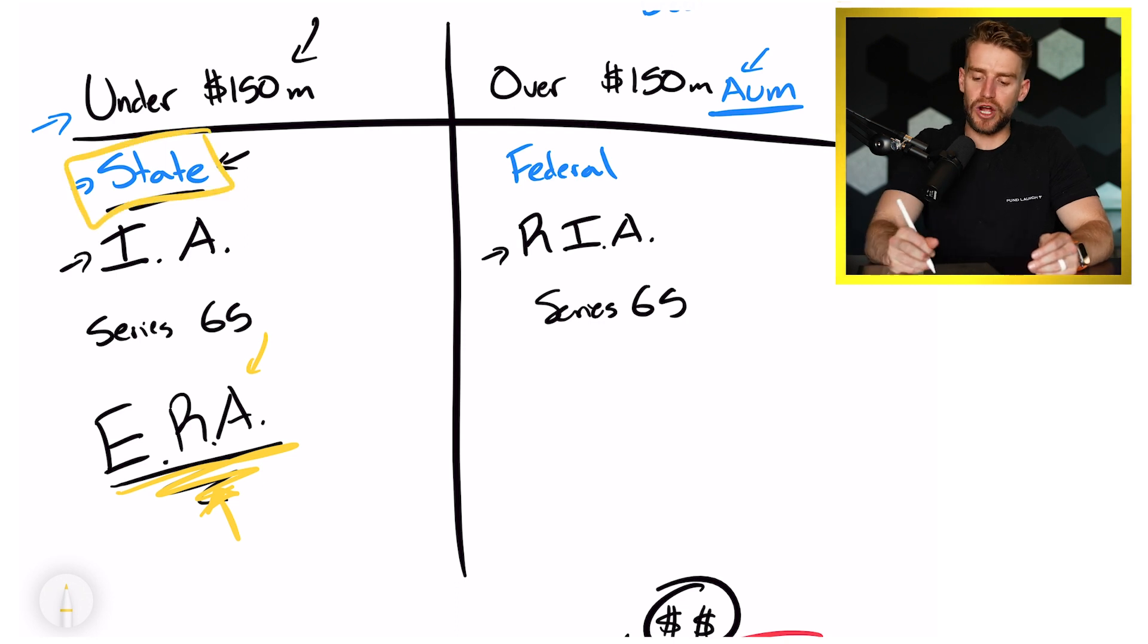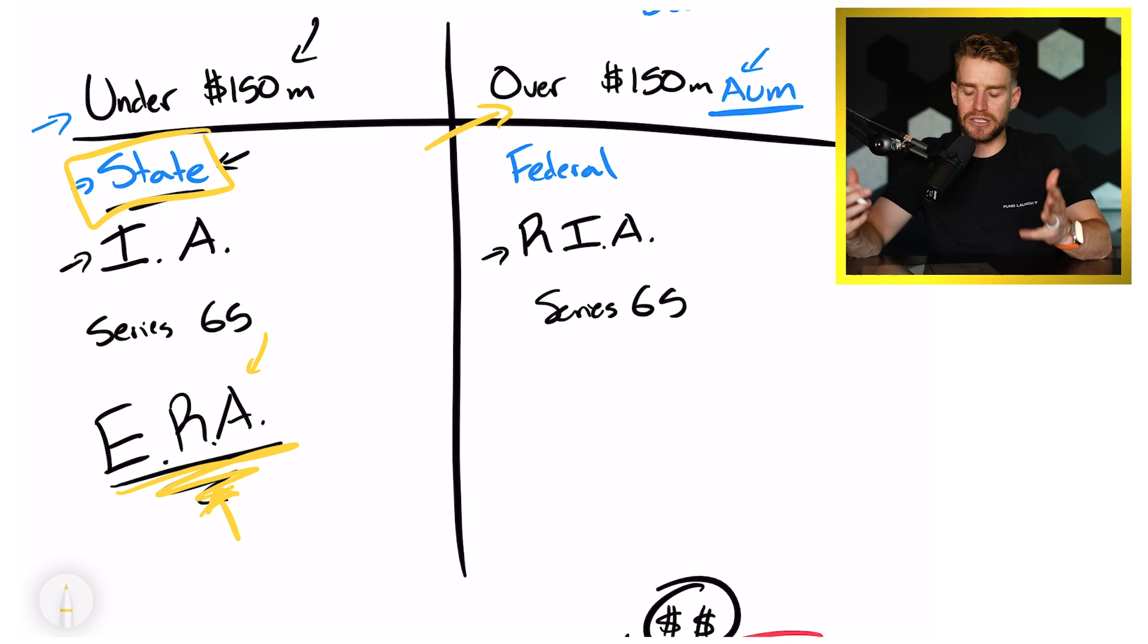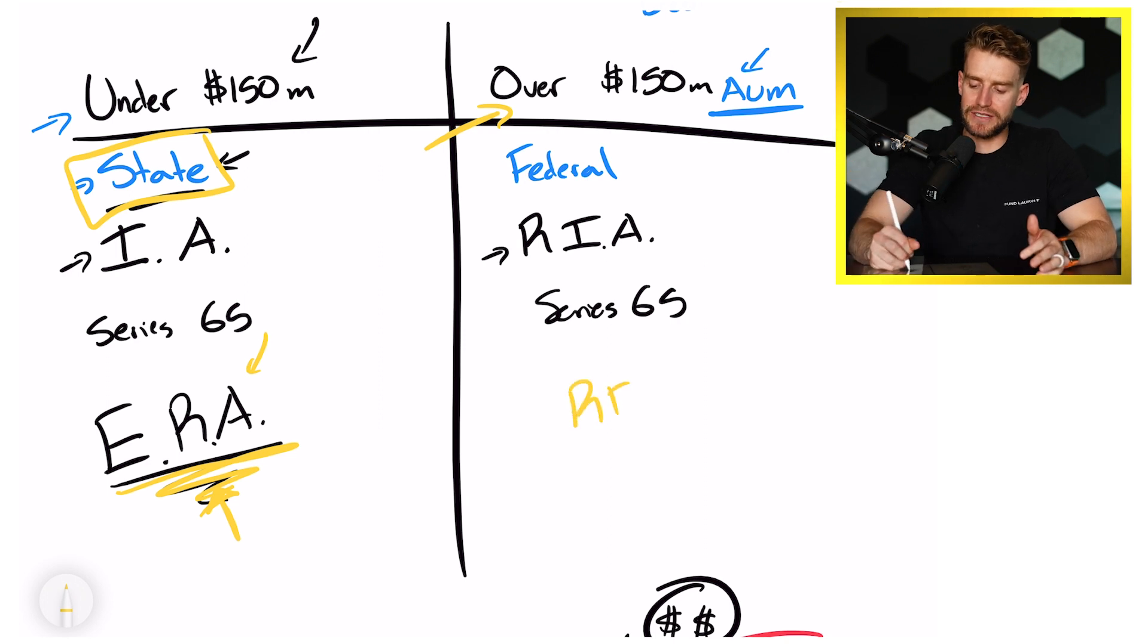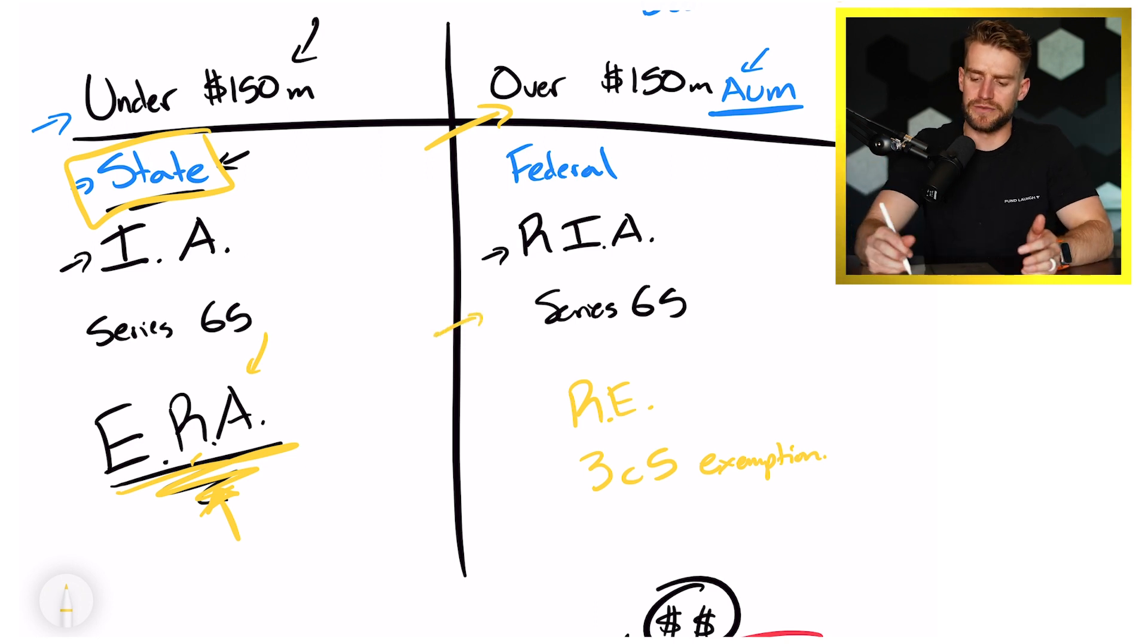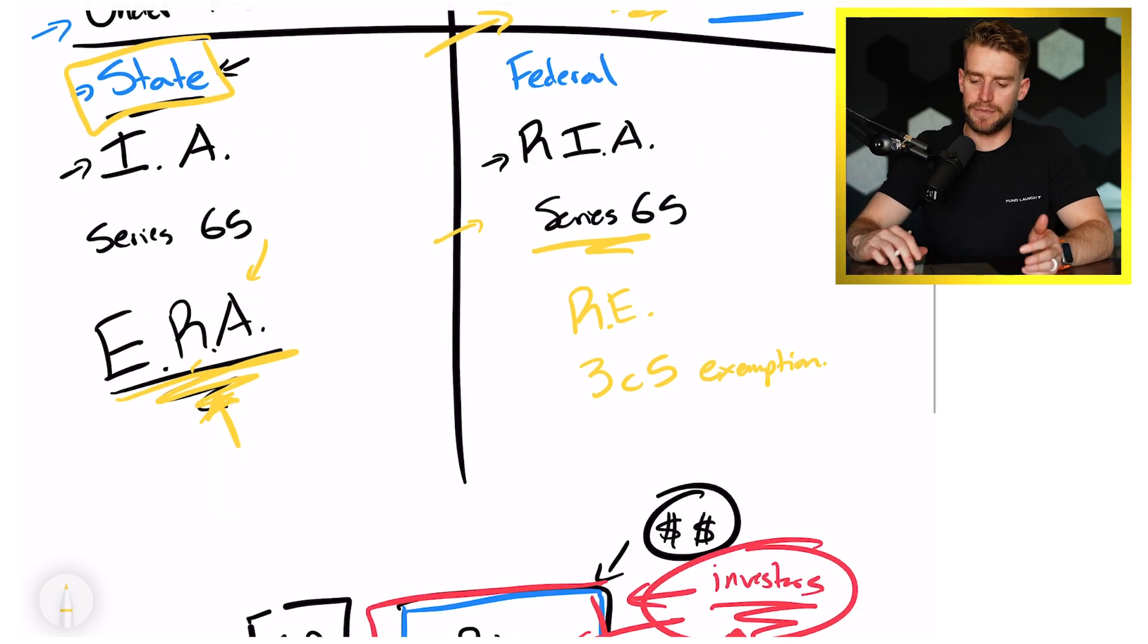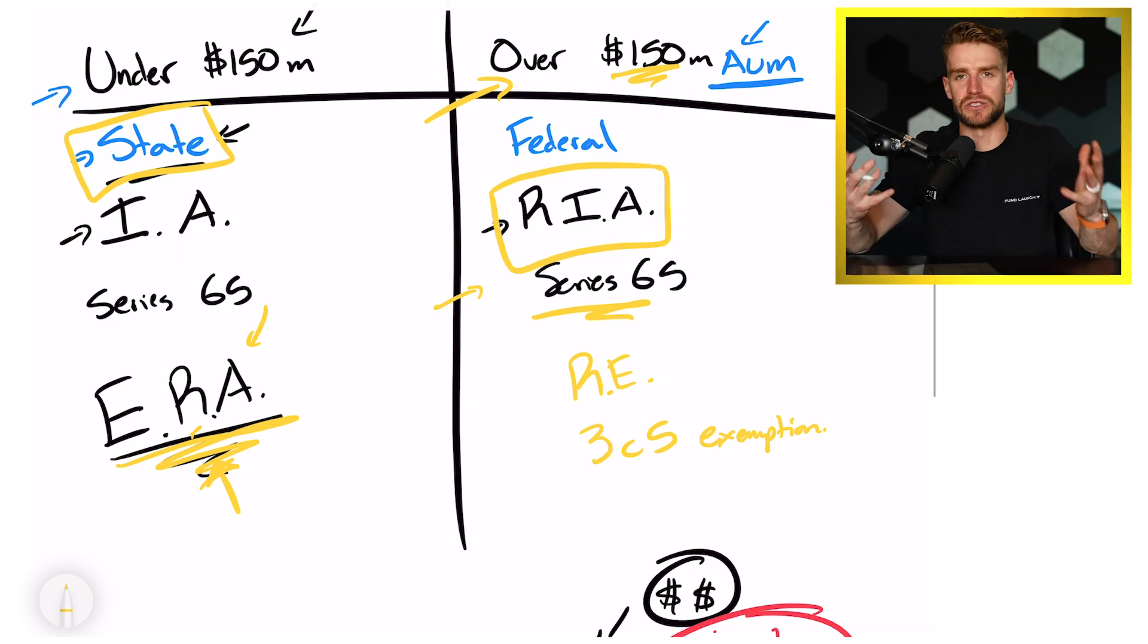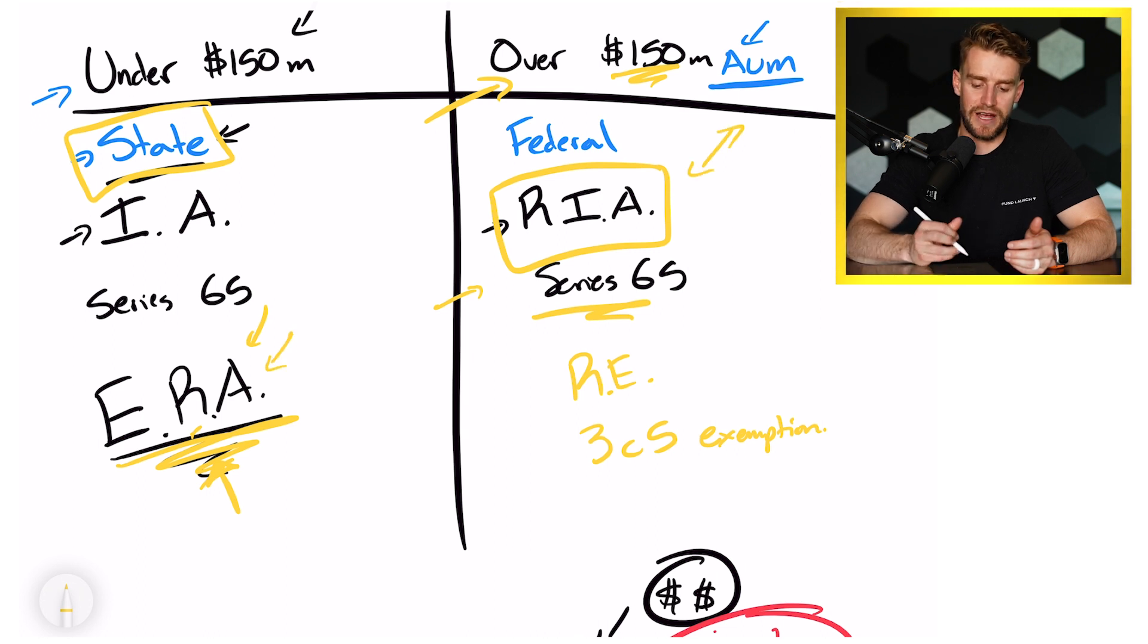Now, once you get over $150 million, there are a few funds where it's kind of a gray area. For example, like real estate funds, you can file under the 3C5 exemption. And sometimes you don't need this, but oftentimes, most of the time, I tell people it's a good idea once you get over $100 million to get your series 65, set up a registered investment advisor and just do it the right way. But I've seen some funds that are $500-600 million dollar AUM, and they don't have 65s. They are still an exempt reporting advisor, depending on the type of fund they're running. Is this making sense so far? Not that hard, right?